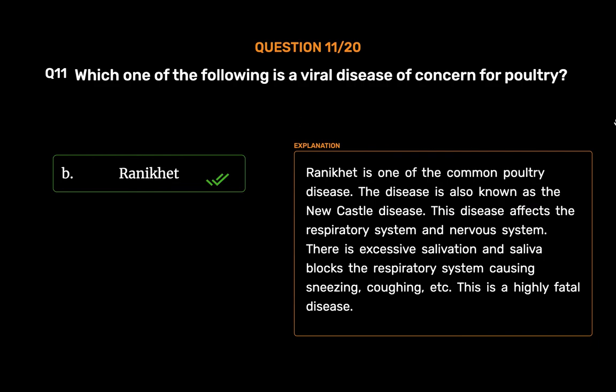Rani Khet is one of the common poultry diseases, also known as Newcastle disease. This disease affects the respiratory system and nervous system. There is excessive salivation and saliva blocks the respiratory system causing sneezing, coughing, etc. This is a highly fatal disease.